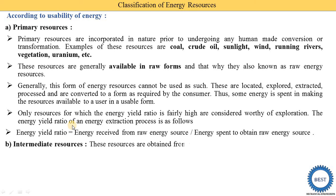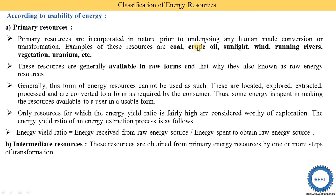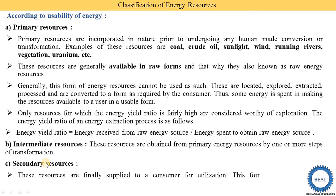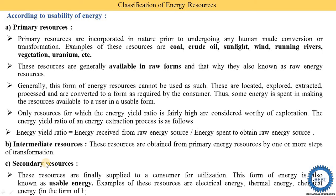The second type is intermediate resources. These resources are obtained from primary energy resources by one or more steps of transformation — meaning we perform various process steps on the primary resources. For example, we process crude oil and get petrol and other products. The last type is secondary resources. These resources are finally supplied to consumers for utilization — the fuel or resources we are actually consuming are called secondary resources, also known as usable energy, because humans, companies, and industries directly use them.